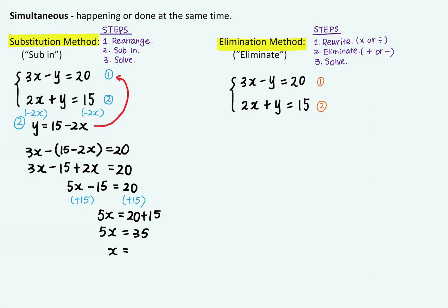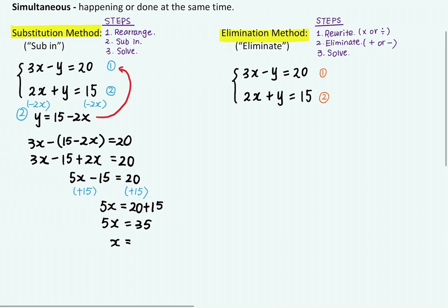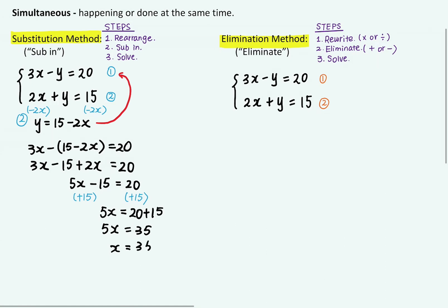To find x, I'm going to divide 5 to both sides. So 35 divided by 5 is equal to 7. So I found x is equal to 7.